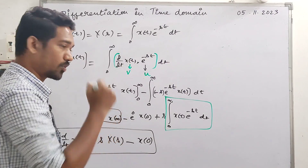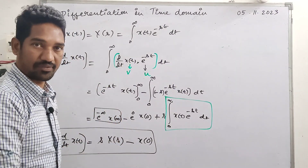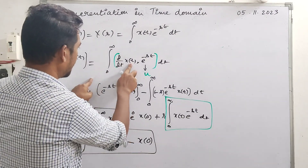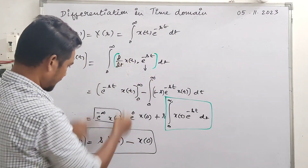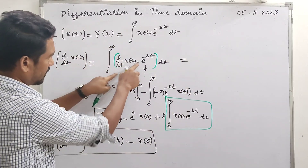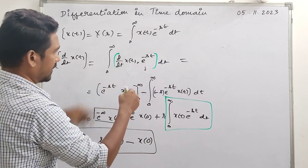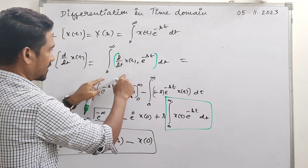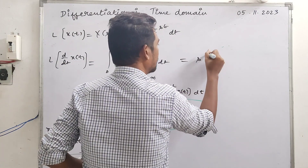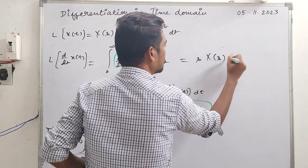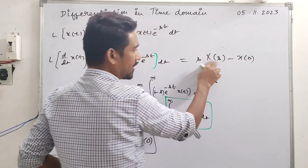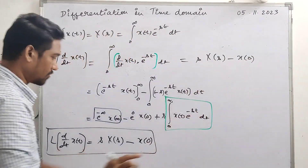The differentiation property leads to the initial value theorem and the final value theorem. According to the definition, the Laplace transform of D/dt of x(t) equals s times x(s) minus x(0). This is the procedure to evaluate the Laplace transform — the resultant is s times x(s) minus x(0). This indicates the Laplace transform with the initial condition.